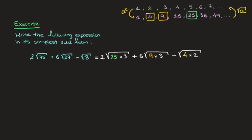Now that we've found the largest square factors of 75, 27, and 8, we split each of these square roots in two using the following very important result: the square root of a times b is equal to the square root of a times the square root of b.